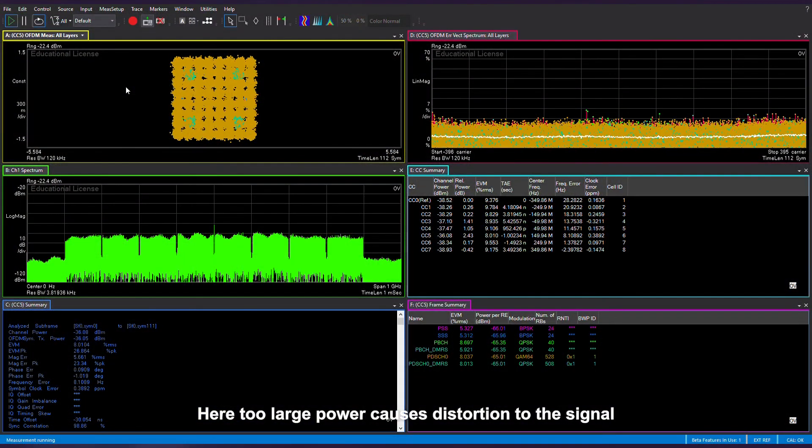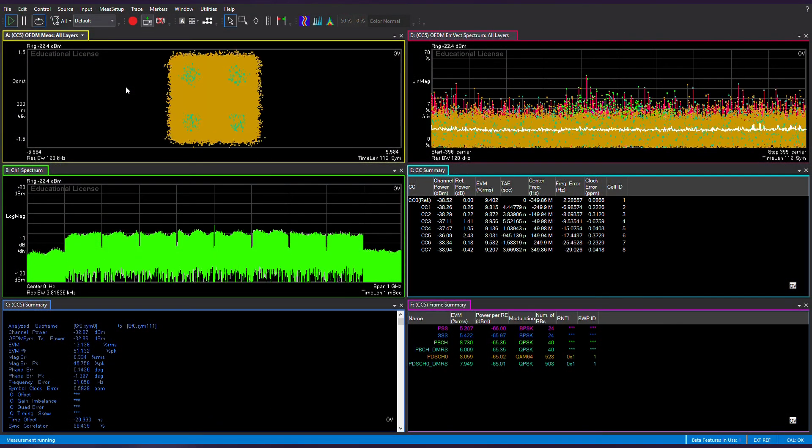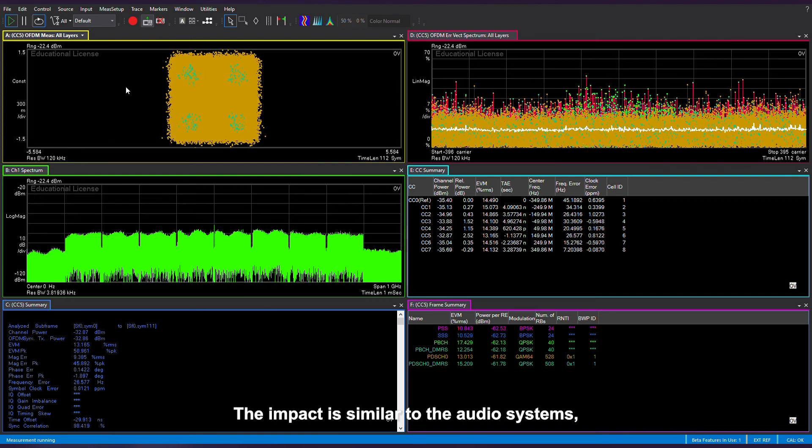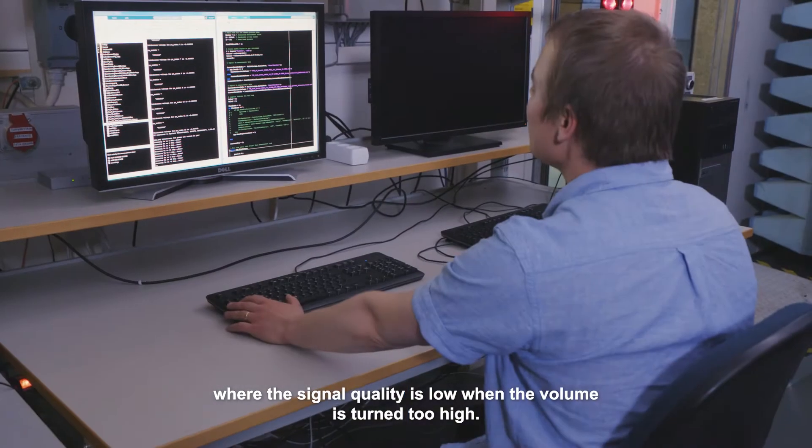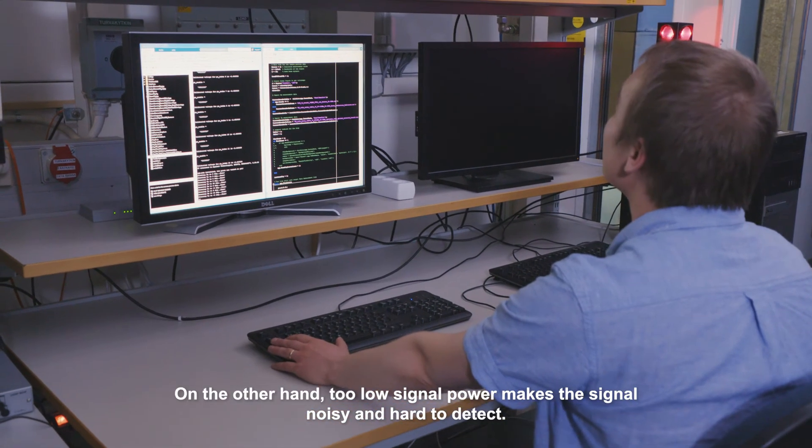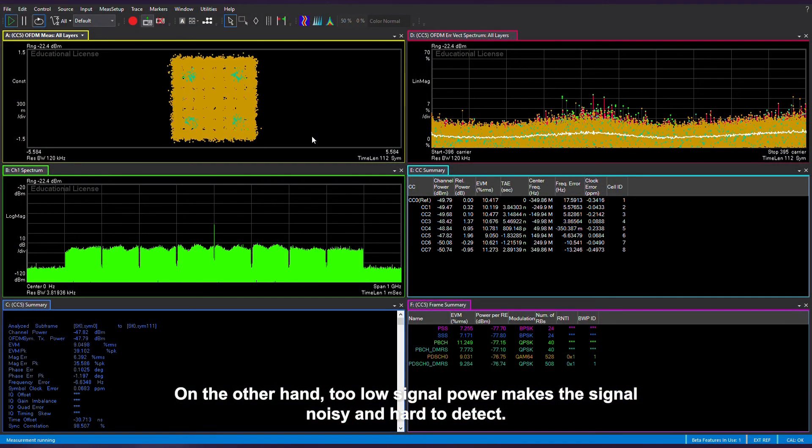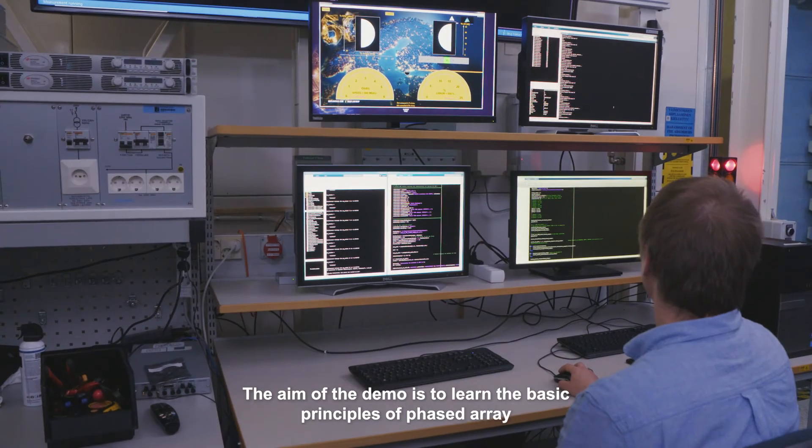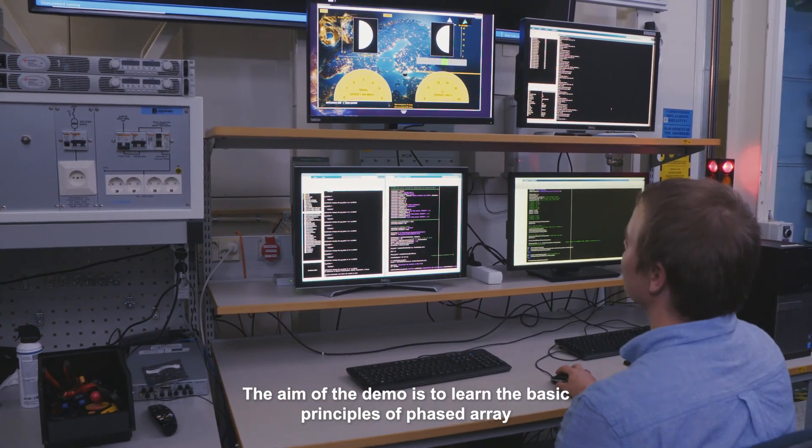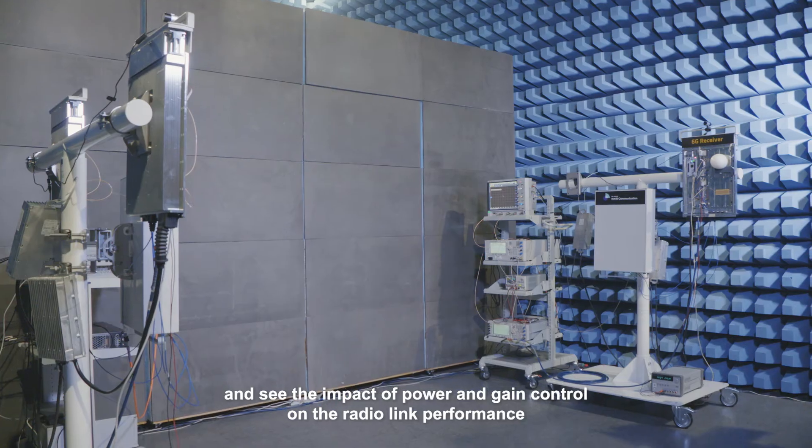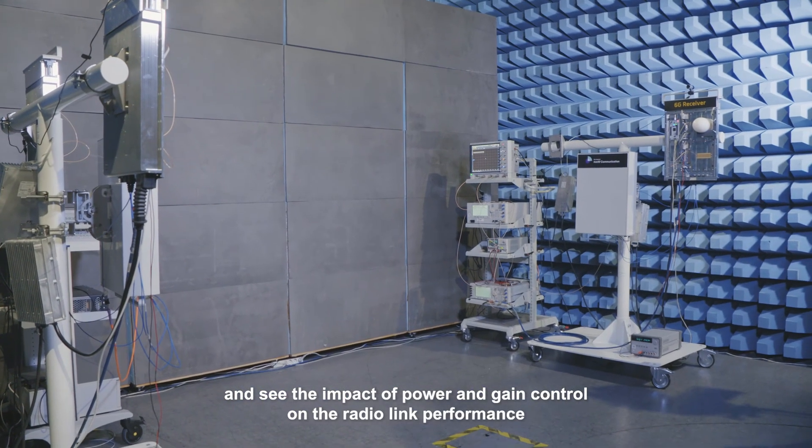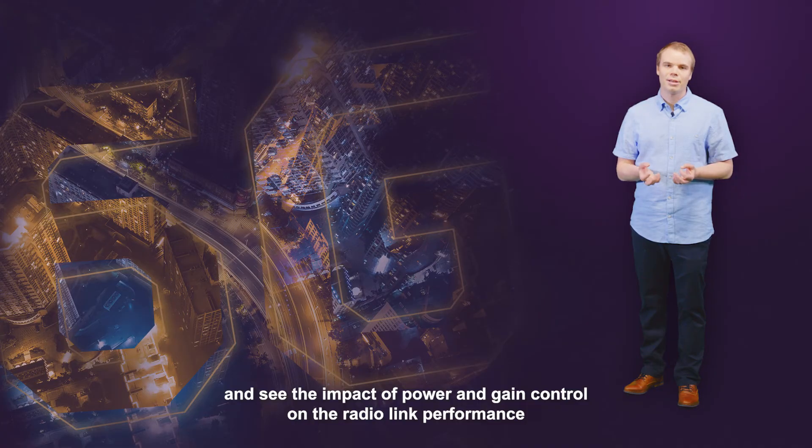Here too large power causes distortion to the signal. The impact is similar to audio systems when the signal quality is low when the volume is turned too high. On the other hand, too low signal power makes the signal noisy and hard to detect. The aim of the demo is to learn the basic principles of phased array and lens-based beamforming techniques and see the impact of power and gain control on the radio link performance.